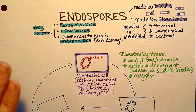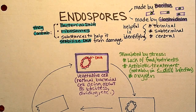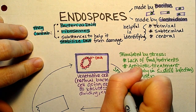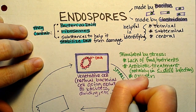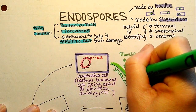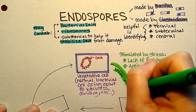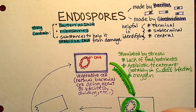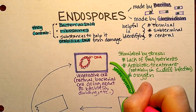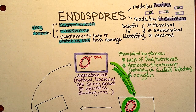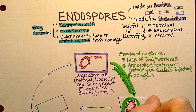This process of making endospores is called sporulation. What happens is that the DNA gets nicely packaged in a thick protein coat that is impervious to water, impervious to radiation, impervious to antibiotics, and can survive in a dormant state for virtually thousands of years.